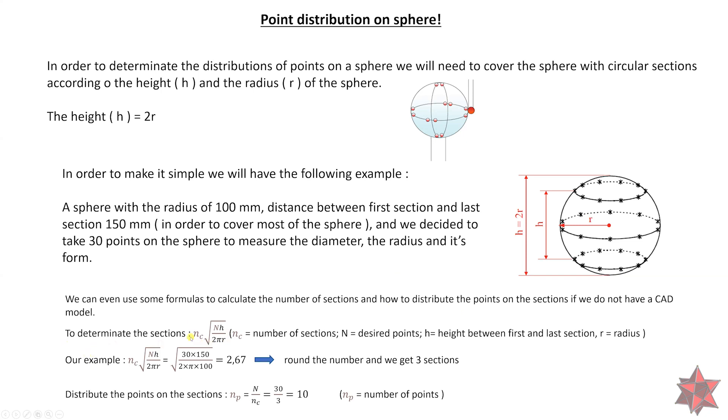This is the formula right here, where NC is the number of sections, N is the desired number of points, H is the height between the first and the last section, and R is the radius. For our example, we have the formula and the calculation is 30, which means the desired number of points times 150,